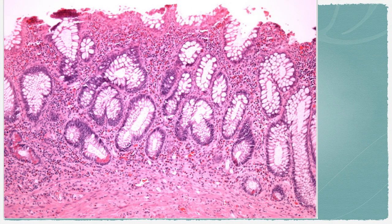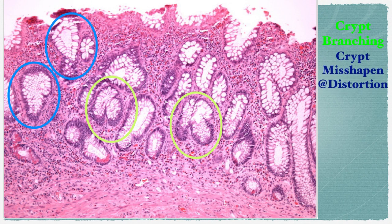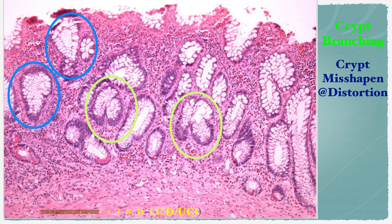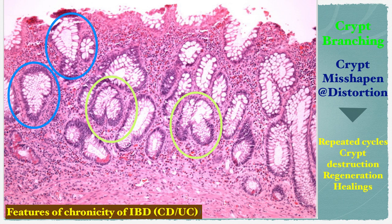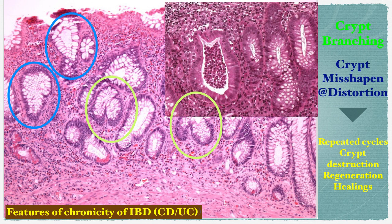This photomicrograph shows inflamed mucosa with multiple crypts. Just look at the crypts carefully — this is not normal. They have abnormal shape and haphazard arrangement; in some crypts, there is branching, while others are misshapen or distorted. These crypt changes indicate chronicity features in inflammatory bowel disease for both Crohn's disease and ulcerative colitis, occurring due to repeated cycles of crypt destruction, regeneration, and healing. Similarly, crypt abscesses — accumulation of neutrophils within the crypt lumen — and cryptitis — infiltration of neutrophils within the crypt epithelium — can happen in both conditions.